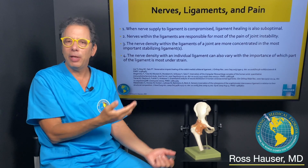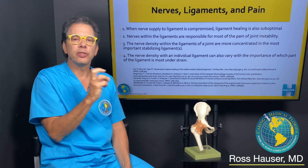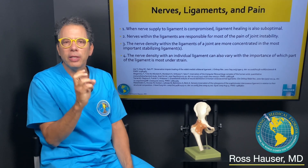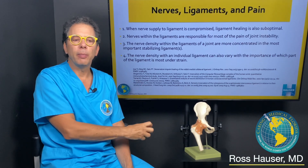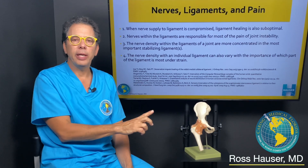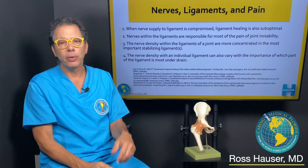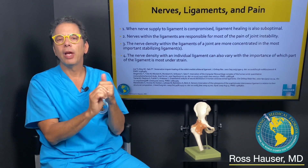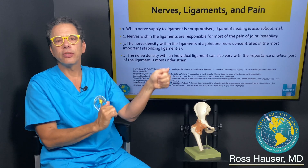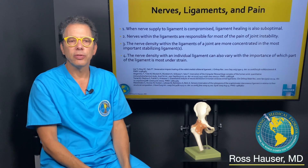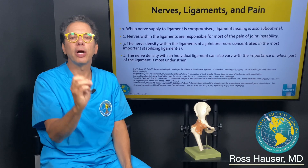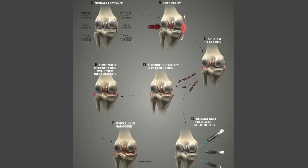For those watching for the first time, prolotherapy is an injection technique that causes the tightening and strengthening of ligaments to resolve joint instability. Most joint instability is ligamentous — it means the ligaments are not strong enough to resist destructive joint motions. Prolotherapy resolves those destructive joint motions, and once you resolve the excessive motions, the arthritic process stops.